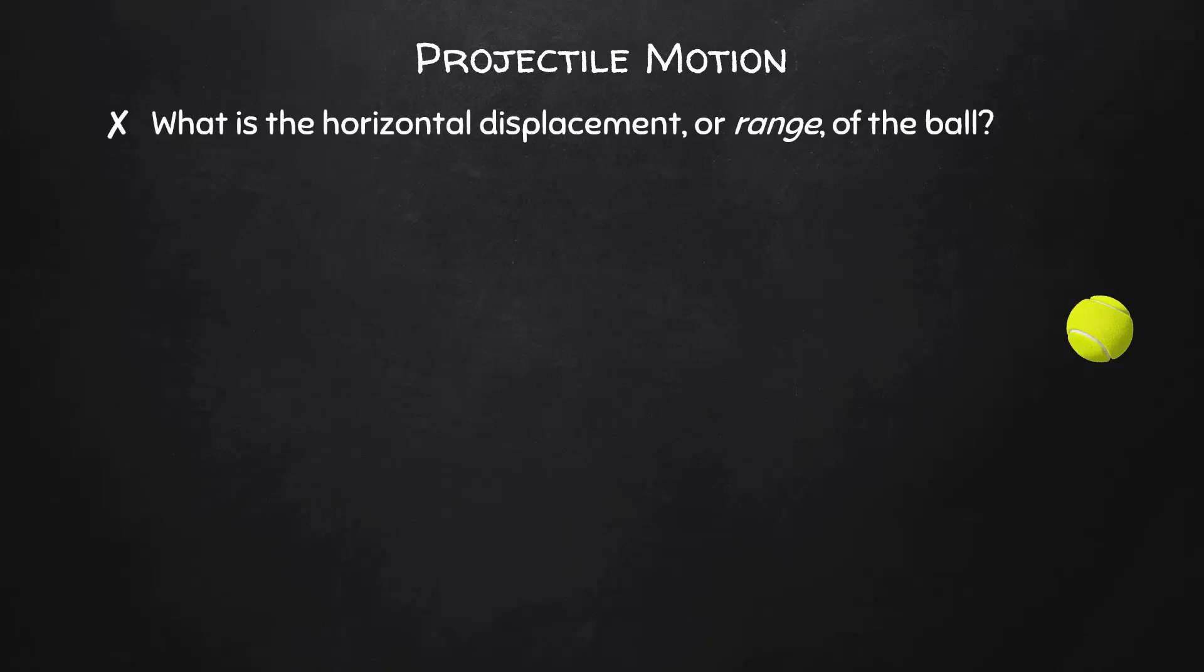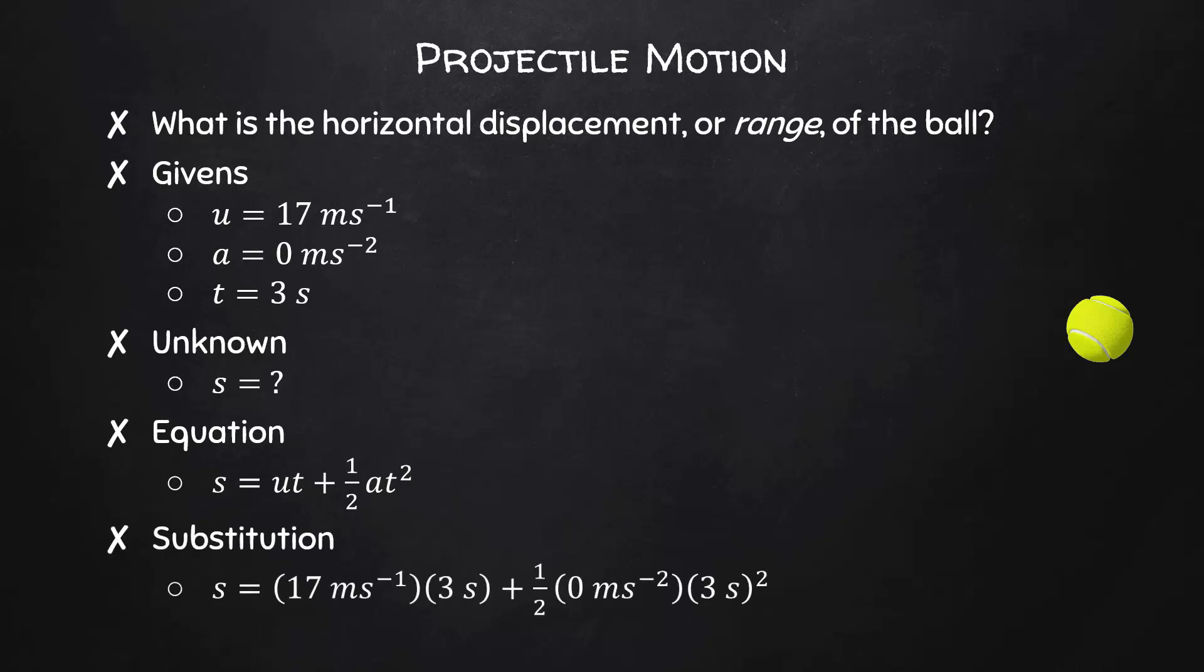Finally, for this problem, let's determine the horizontal displacement, otherwise known as range, of the ball. We know that horizontally, it was moving 17 meters per second. Horizontally, it doesn't accelerate. There's nothing to make it go faster or slower horizontally. And we know from the vertical motion of the ball that it travels for a time of 3 seconds. Displacement is our unknown, which means that one equation we could use is s equals ut plus 1 half at squared. When we substitute in our known values, we'll find that the horizontal displacement, or range of the ball, is 51 meters.